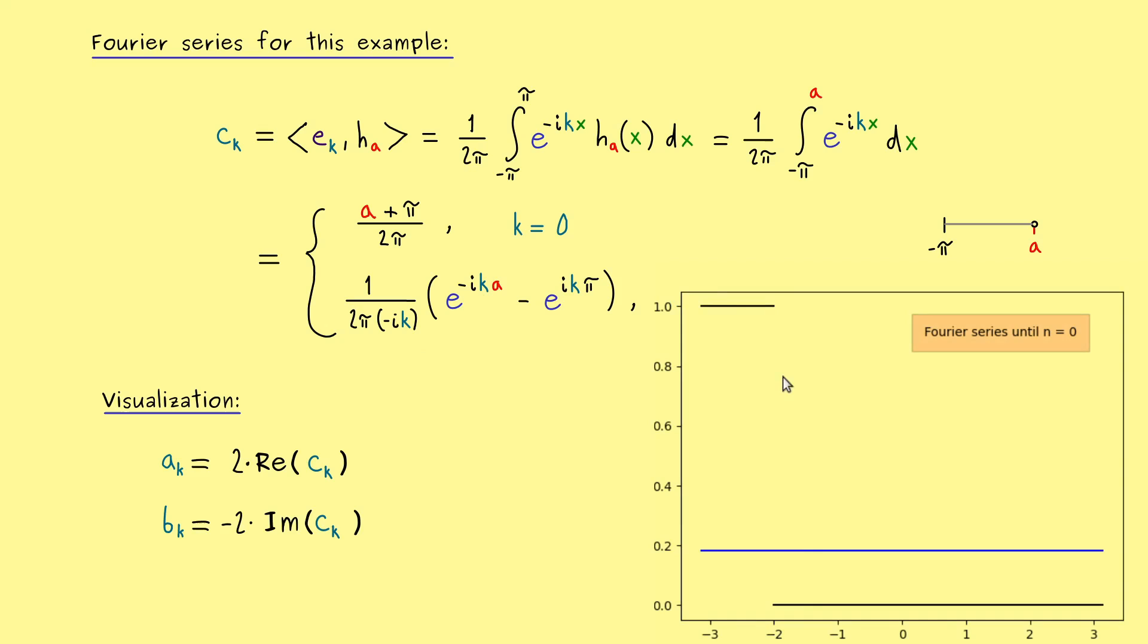You just have to transform the coefficients and this is something we have already discussed. For example a_k you get out as two times the real part of c_k, and b_k you get as minus two times the imaginary part of c_k. Indeed this is easy to check and may be helpful to remember, because the real Fourier series might be better for plotting. Then I would say let's start plotting the function. And here you can see we have chosen a to be equal to minus two. Hence these two lines here represent our function h_a. And the line here in the middle is already our Fourier series up to n is equal to zero, which means it's only the constant function given by our constant here.